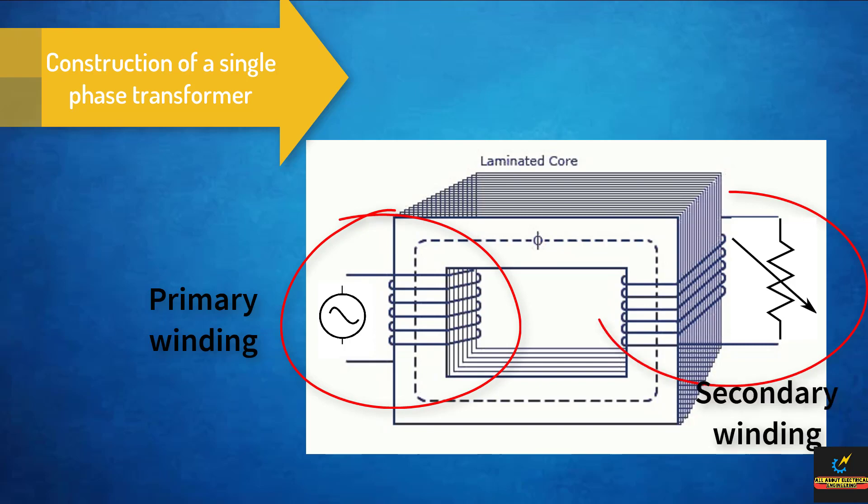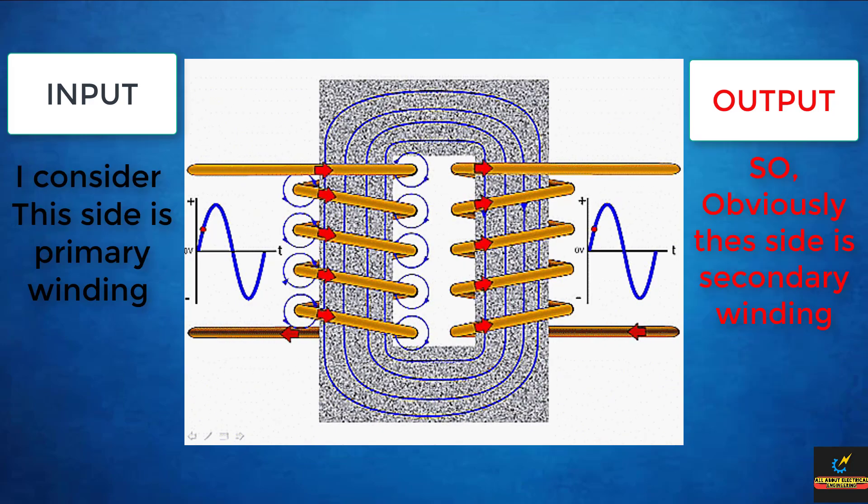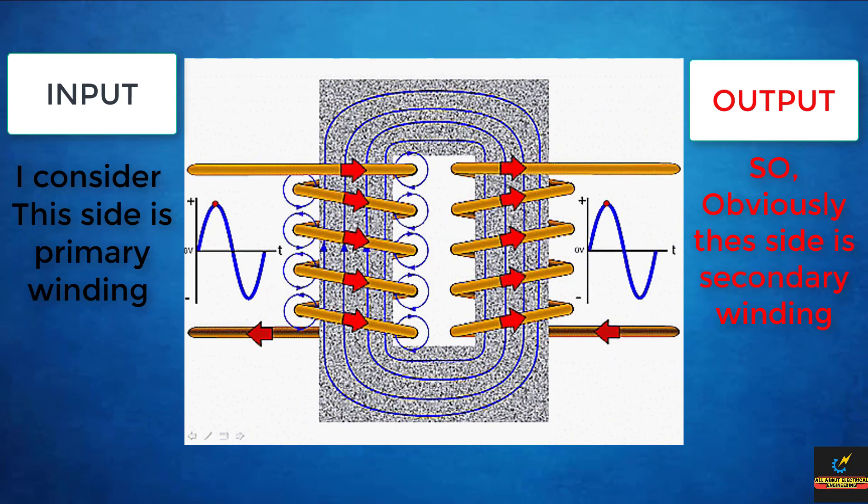And which of the winding is connected to the load is called the secondary winding. Please note that we can easily choose any one of the two windings as the primary winding, and hence the other winding acts as a secondary winding.